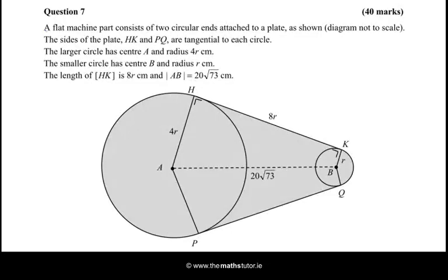Hi there! A flat machine part consists of two circular ends attached to a plate as shown. The sides of the plate are tangential to each circle.